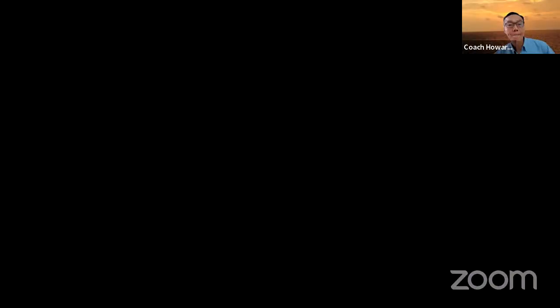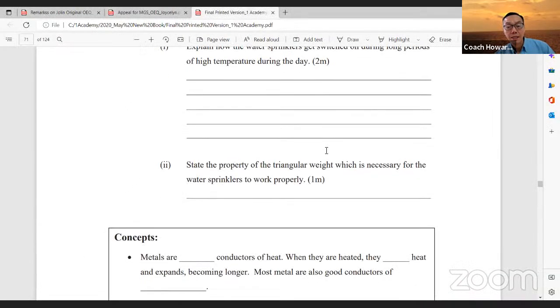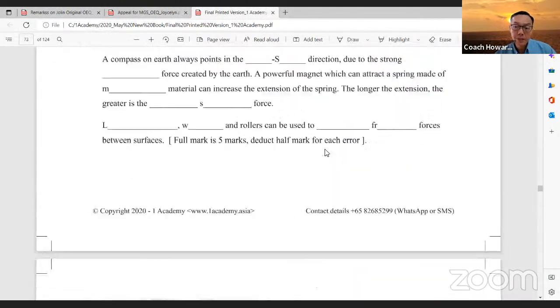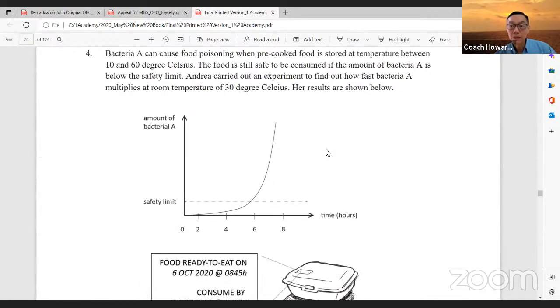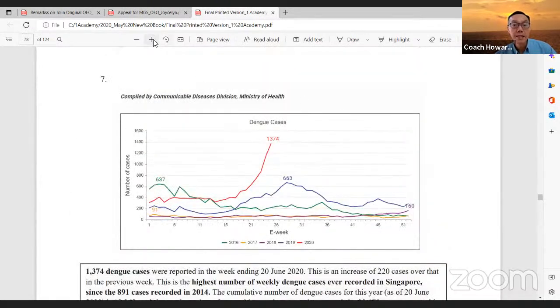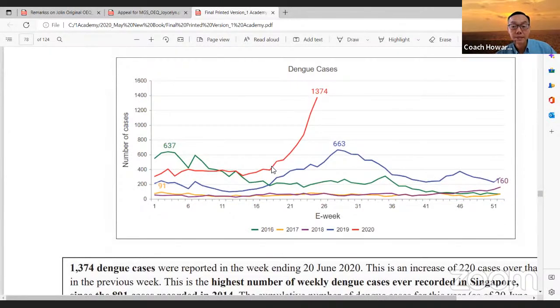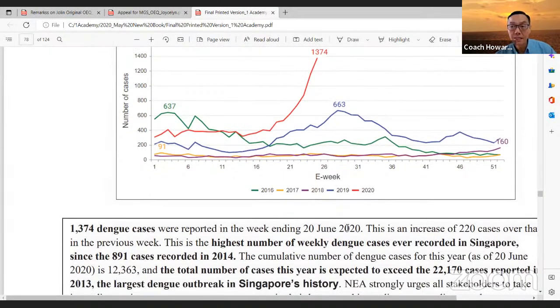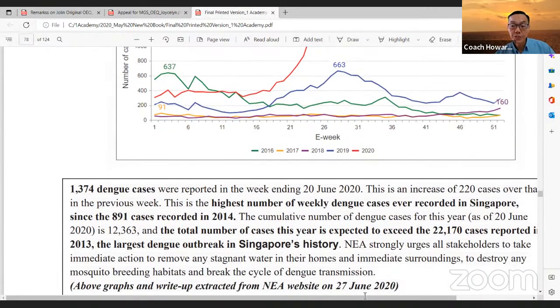This chart is actually reproduced from the NEA website, back in 2020. The date is quite easy to remember, 20 June 2020. There were 1,374 dengue cases reported in the week. This one is from the NEA website. I integrated this example to ask students to teach them about graphical representation.